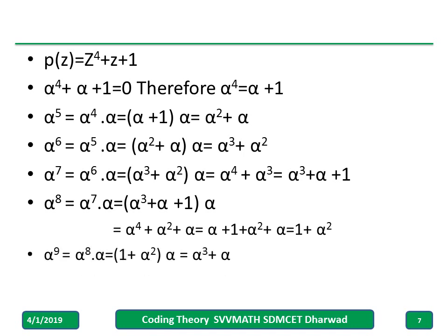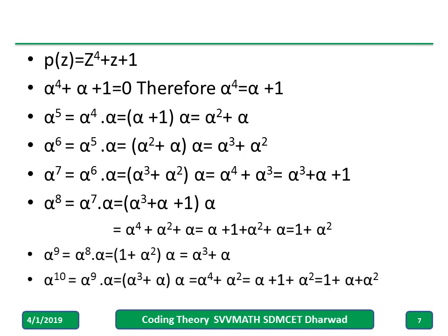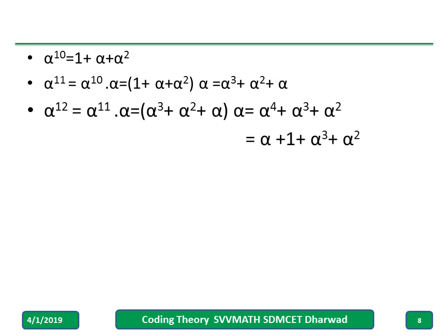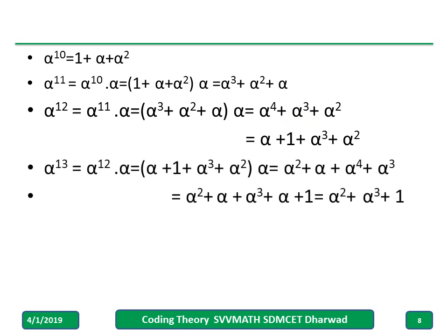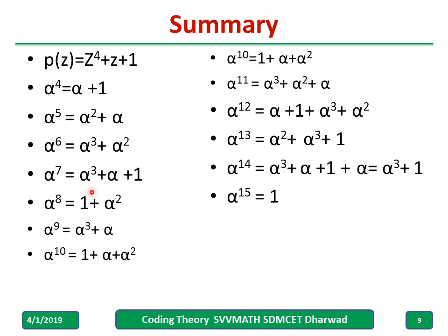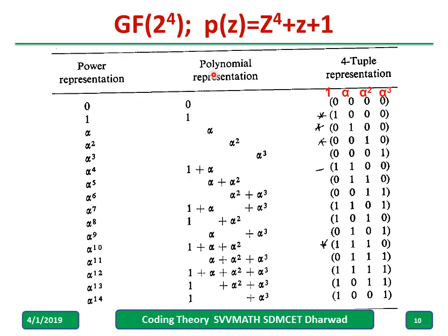Similarly, powers 8, 9, and 10 are done — pause here and try them yourself, then compare. Alpha raised to 11 is given by alpha raised to 10 times alpha; substituting alpha raised to 10 and multiplying, I write the result. Alpha raised to 12 equals alpha raised to 11 times alpha. Alpha raised to 13, 14, and 15 follow similarly. Alpha raised to 15 equals alpha raised to 14 times alpha; alpha raised to 14 is alpha cubed plus 1 times alpha, and alpha cancels giving 1. This is the consolidated table from alpha raised to 4 up to alpha raised to 15, with the 4-tuple representation for all elements.